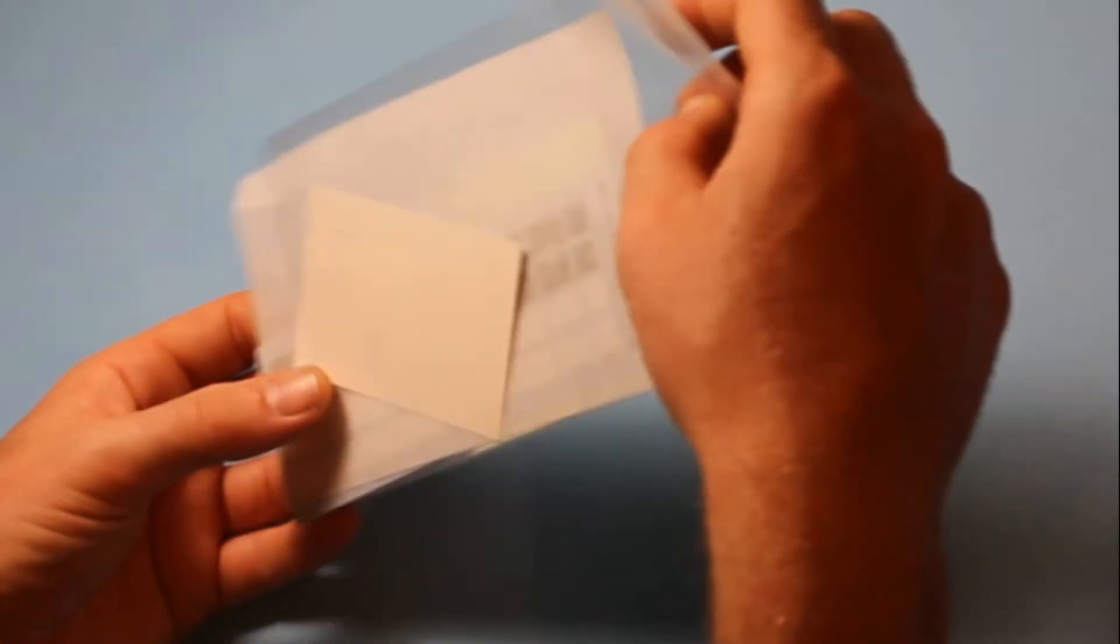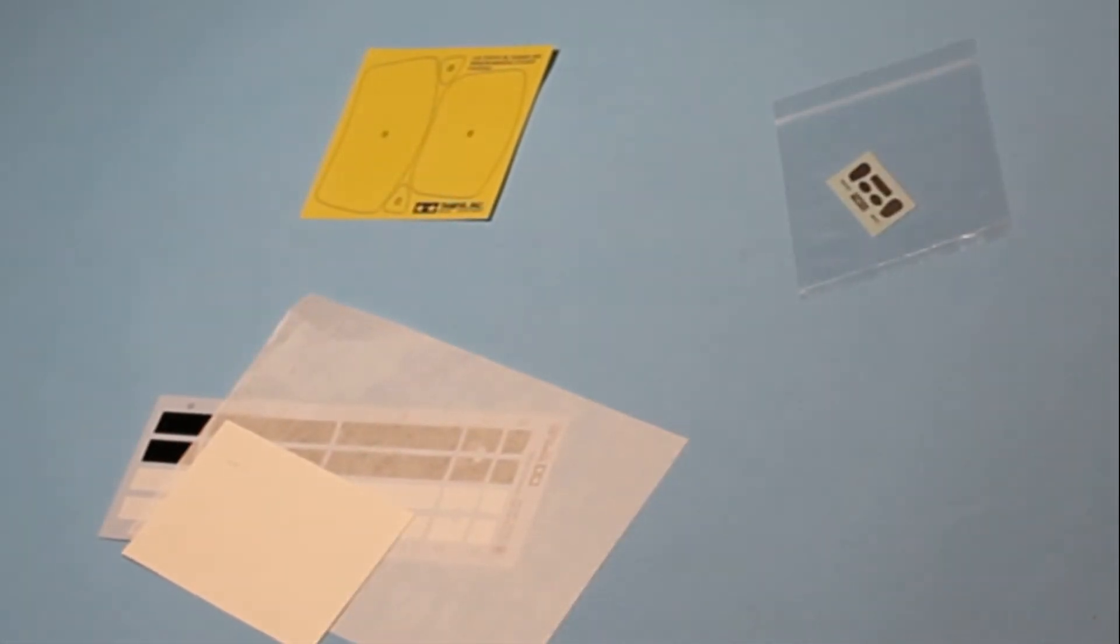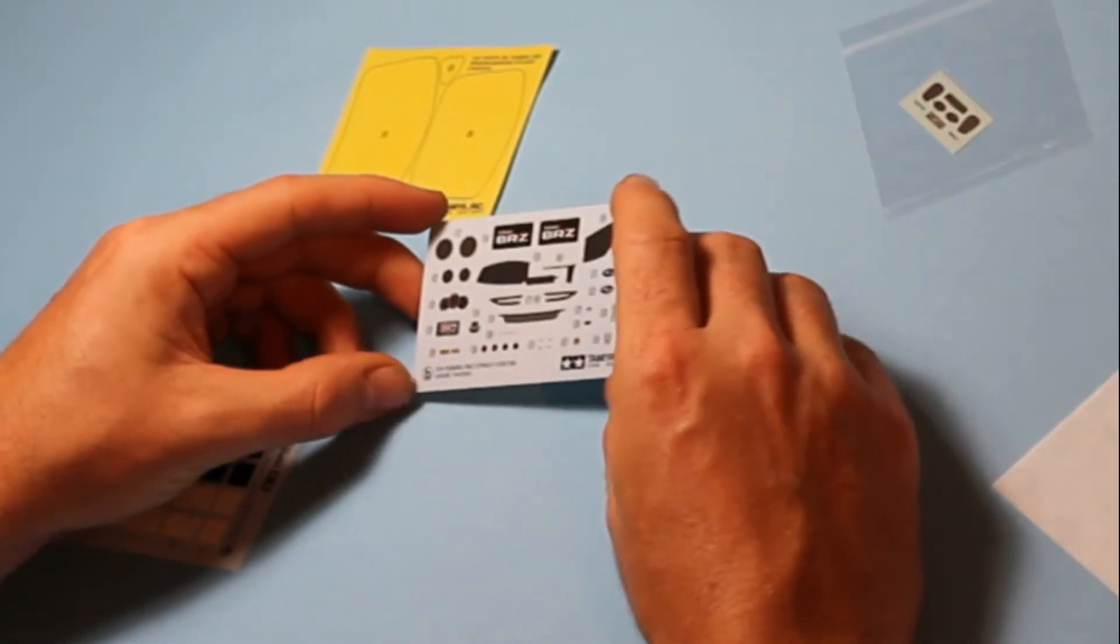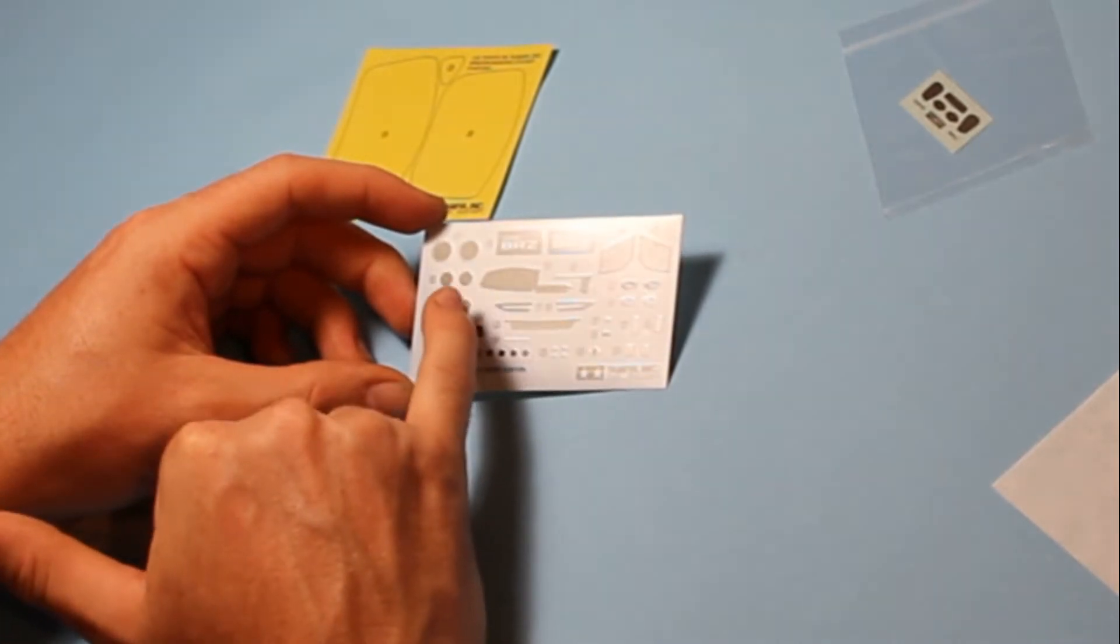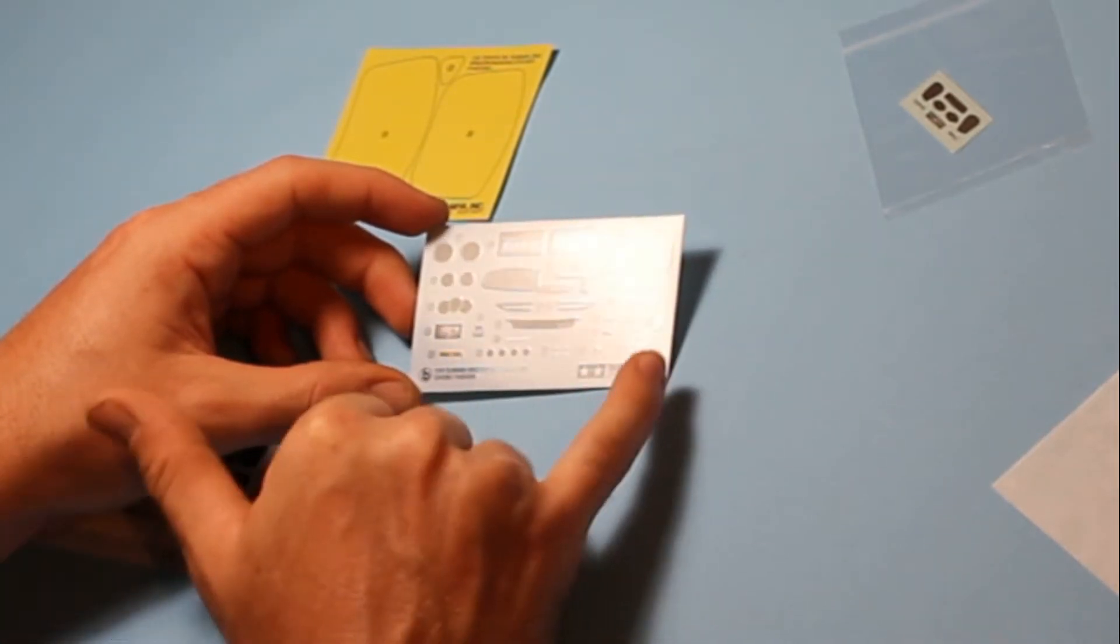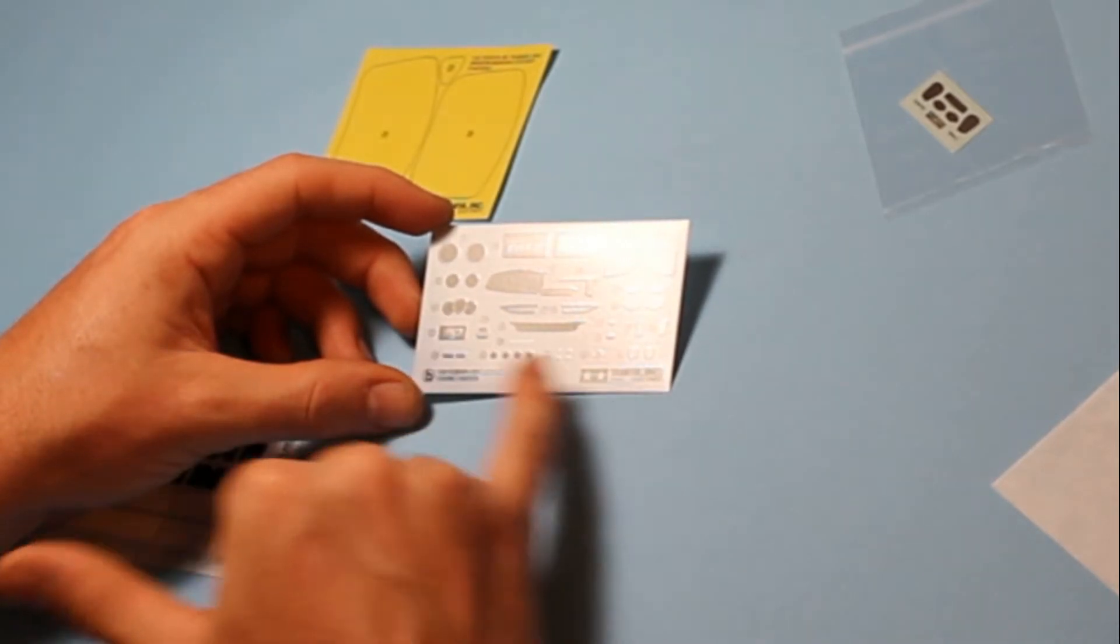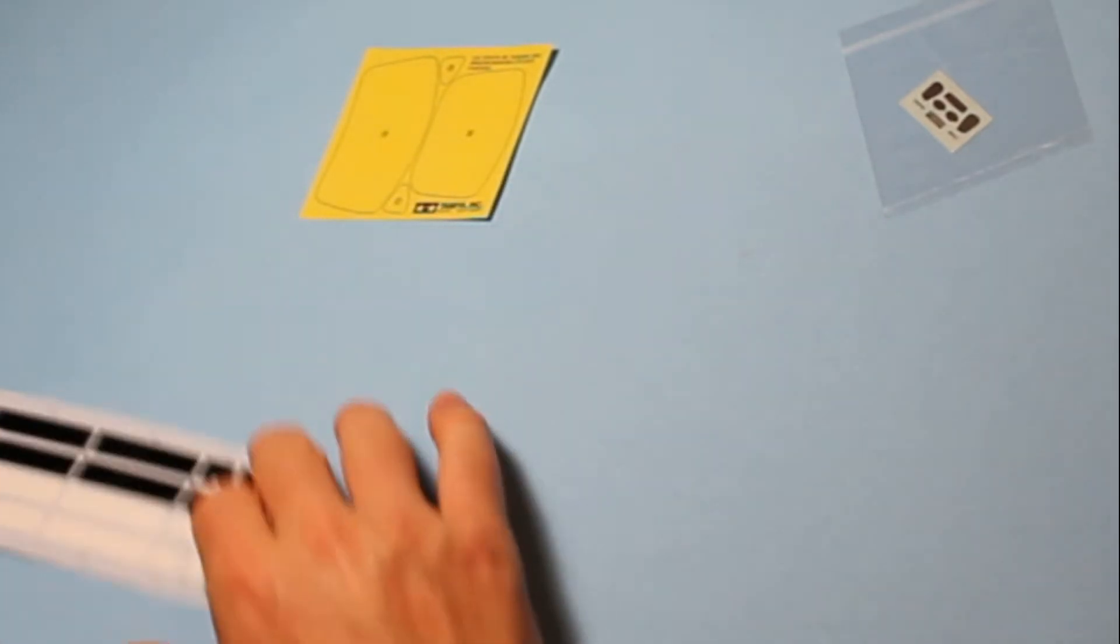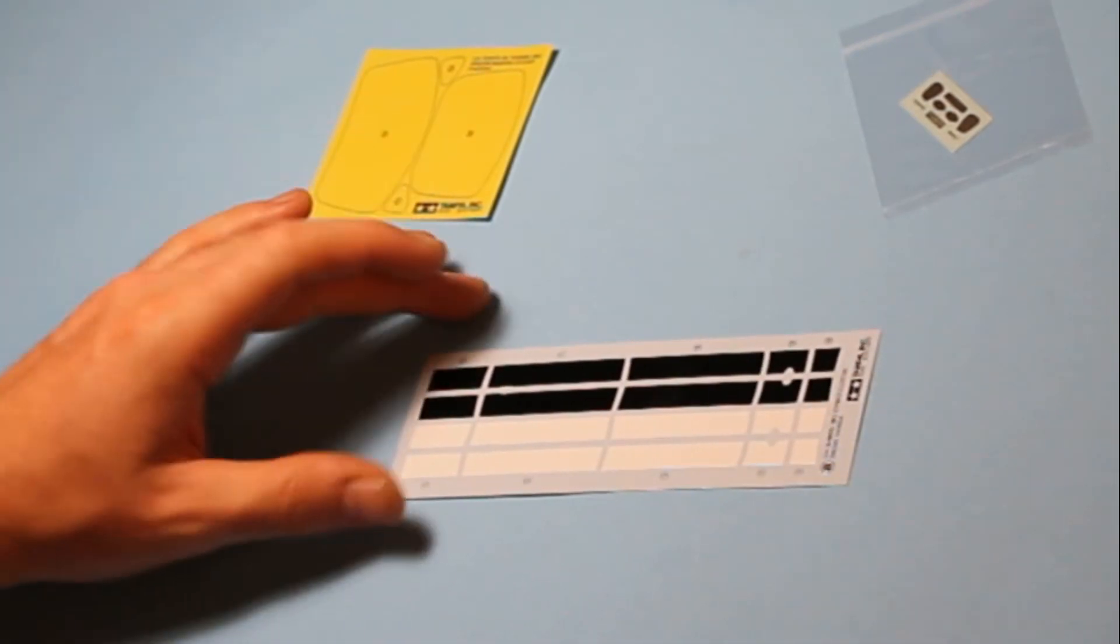Then moving on to the decals, everything's brilliantly packaged in here as you would expect with Tamiya kits. There's a few sheets of decals and masking. There's colored decals for parts of the dashboard and some of the carbon areas on the body. You've also got instrument panel parts and dials and pedals. There's the stripes for the bodywork so you've got black or white depending on what color you choose.